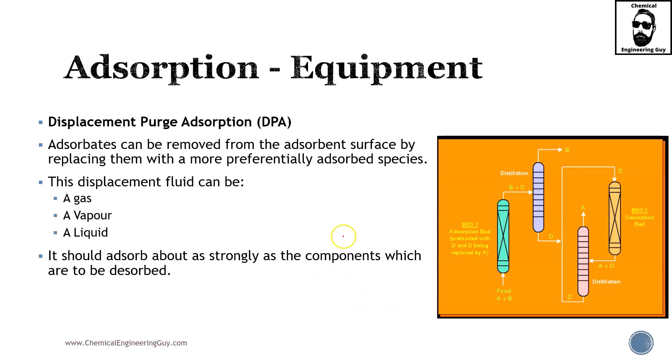And lastly, this is the last equipment I want to show you. Displacement or purge adsorption, DPA. Adsorbate can be removed from the adsorbent surface by replacing them with a more preferential adsorbent species. Essentially you're going to displace it. The displacement can either be done by a gas, liquid, or vapor. In theory you can also do this by using solid in powder, but now we're going to stick to fluids.